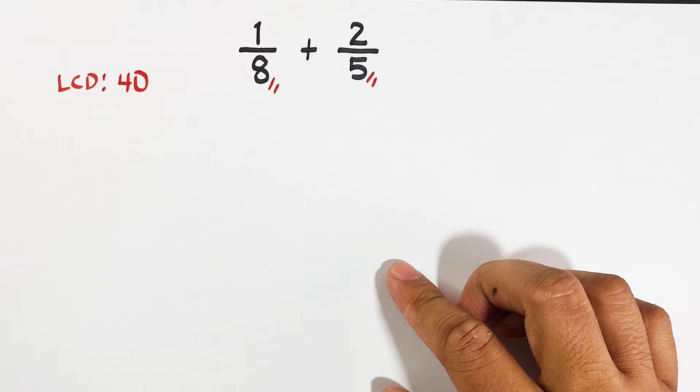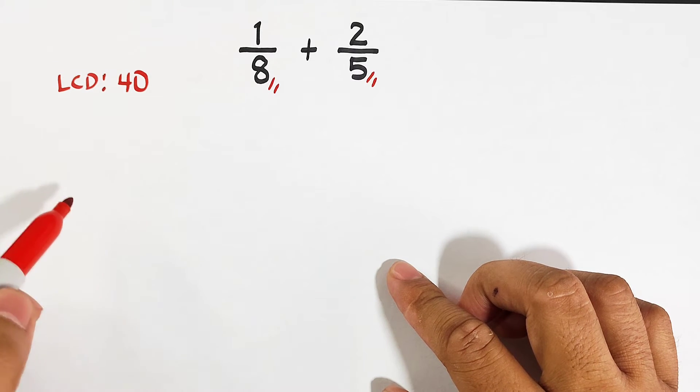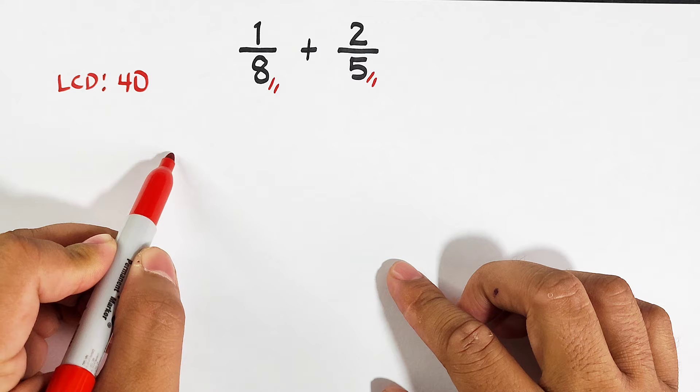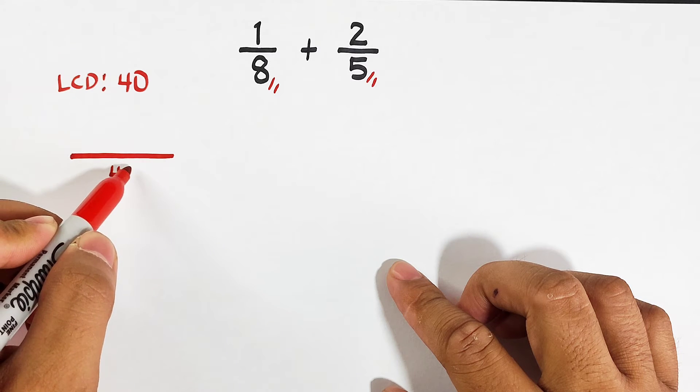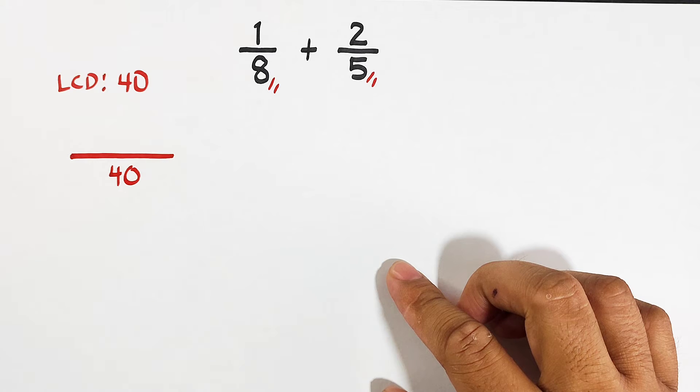So how do we add this using the LCD? First, we will put here 40 in your denominator. Then try to memorize this process: divide and multiply.